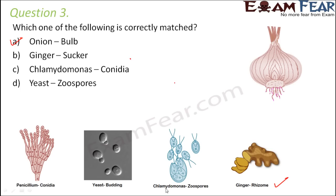For Chlamydomonas, conidia is for Penicillium — Penicillium reproduces asexually with the help of conidiophores. Chlamydomonas reproduces asexually by zoospores, so Chlamydomonas–conidia is not a correct match. Yeast does not reproduce by zoospores; zoospores are for Chlamydomonas, while yeast reproduces by budding. Therefore the correct option is onion–bulb.